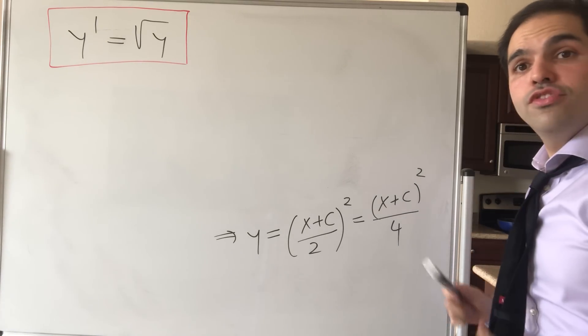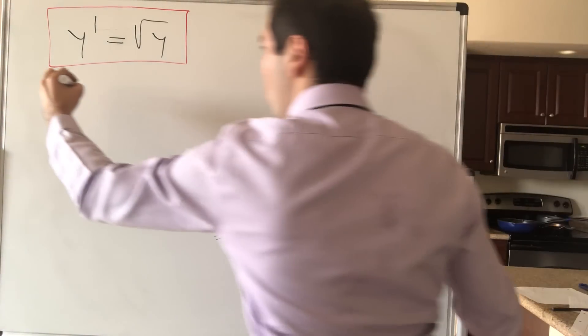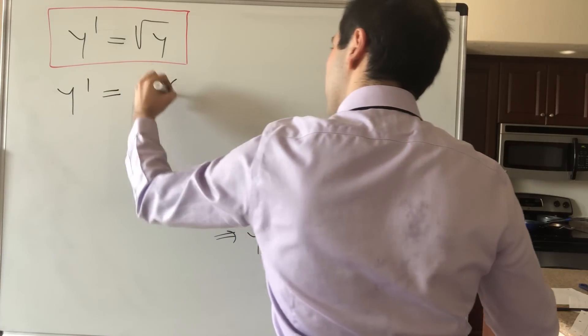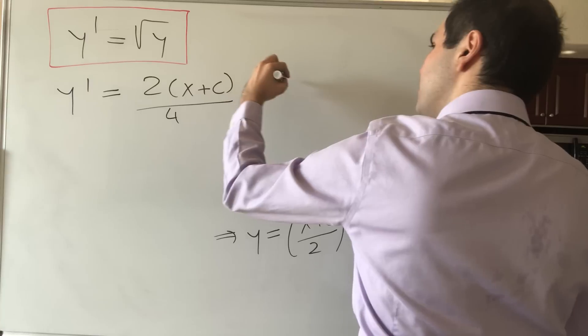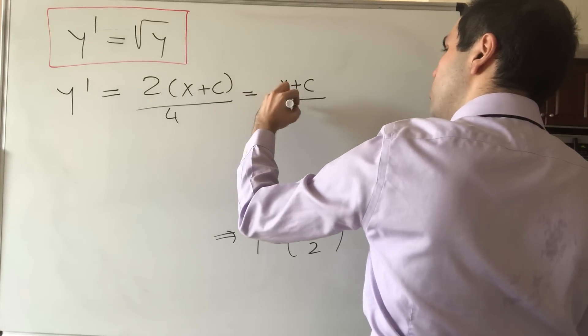Because look, what happens if you calculate the derivative? So y prime, that is, 2 times x plus c over 4. And that's x plus c over 2.